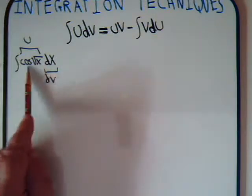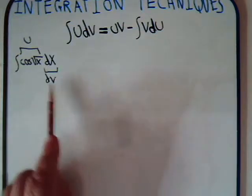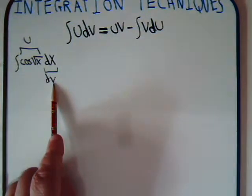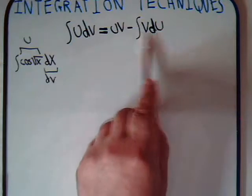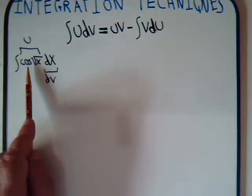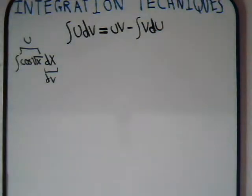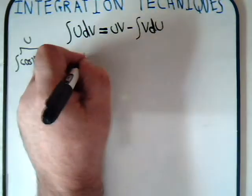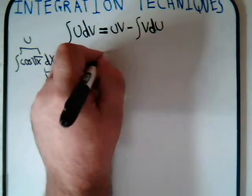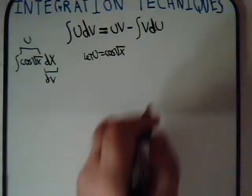We can differentiate the cosine term to call it u and get du — that's not a problem. And for dv, we can integrate dx to get v = x — that's not a problem either. The question is whether the new integral we form will be solvable, or even more complicated than the one we started with. So, since we seem to have only one way to go, let's try it. We'll say let u equal the cosine of the square root of x.